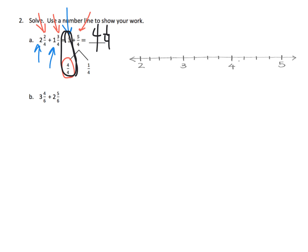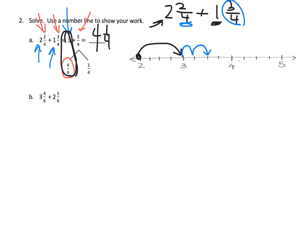If we wanted to show this on a number line, there's a variety of ways we could show it. We could start off with two and two fourths plus one and three fourths. We begin at two, make a hop of one, then a hop of two fourths, then a hop of three fourths, and where did we end up? We ended up at four and one fourth — exactly what we knew all along.